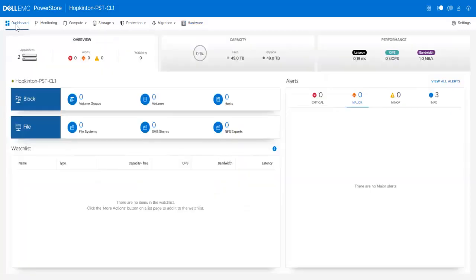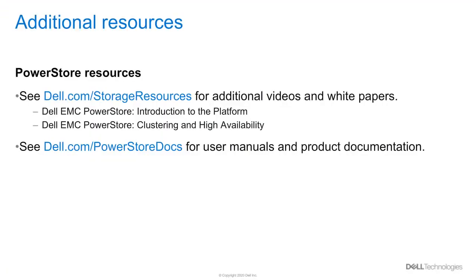Click Dashboard. You can see that the two appliances are shown on the dashboard and the total capacity has increased to reflect both appliances. This concludes the demonstration on adding a new appliance. This is the end of the video. For additional resources, please check the following related whitepapers on dell.com/storage-resources and user manuals and product documentation on dell.com/PowerStore-docs. Thank you for watching this PowerStore video.